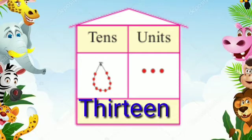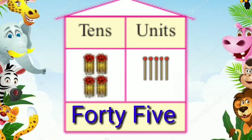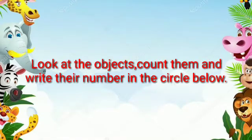1 ten, 3 units — 13. In words: t-h-i-r-t-e-e-n, 13. 4 tens, 5 units — 45. In words: f-o-r-t-y-f-i-v-e, 45. Look at the objects, count them, and write their number in the circle.